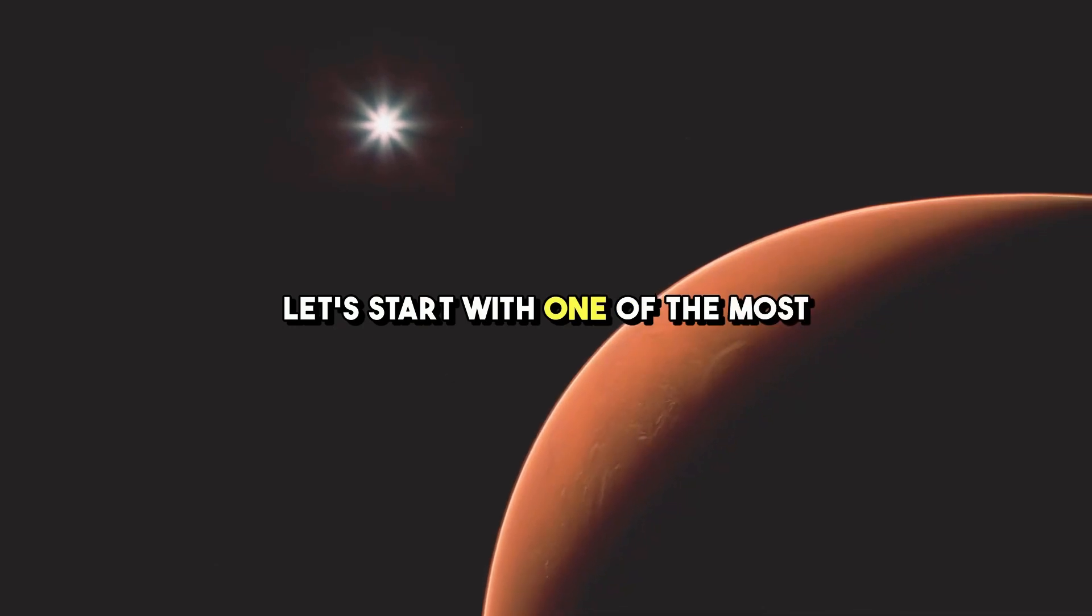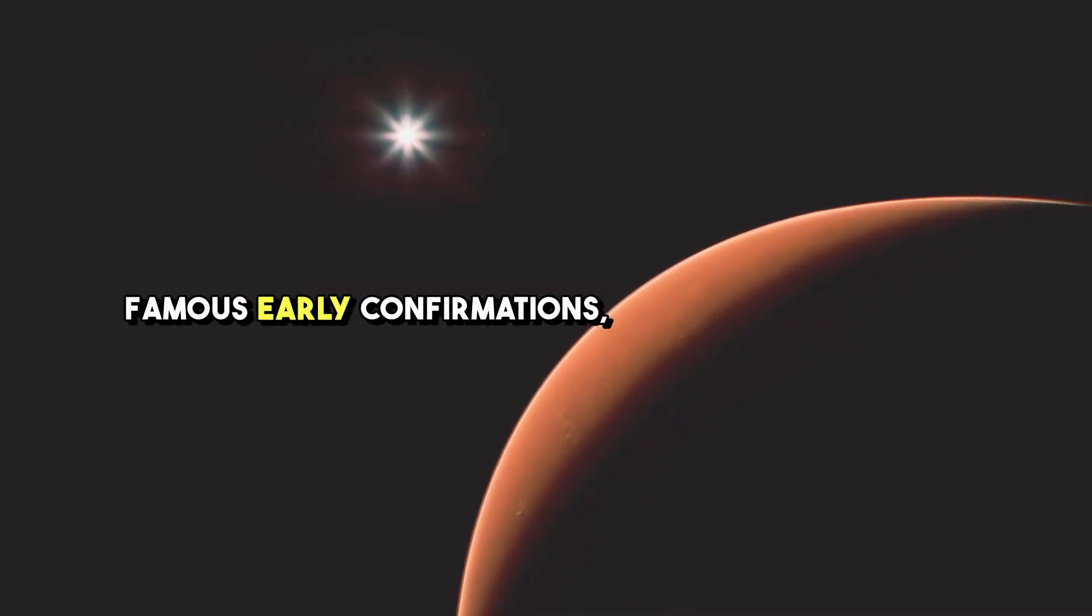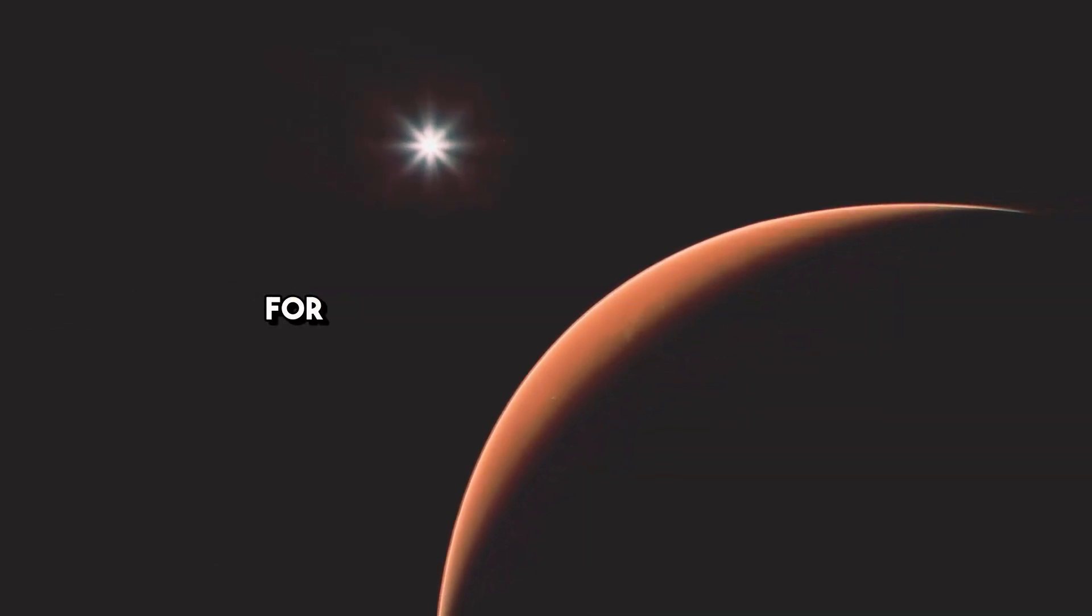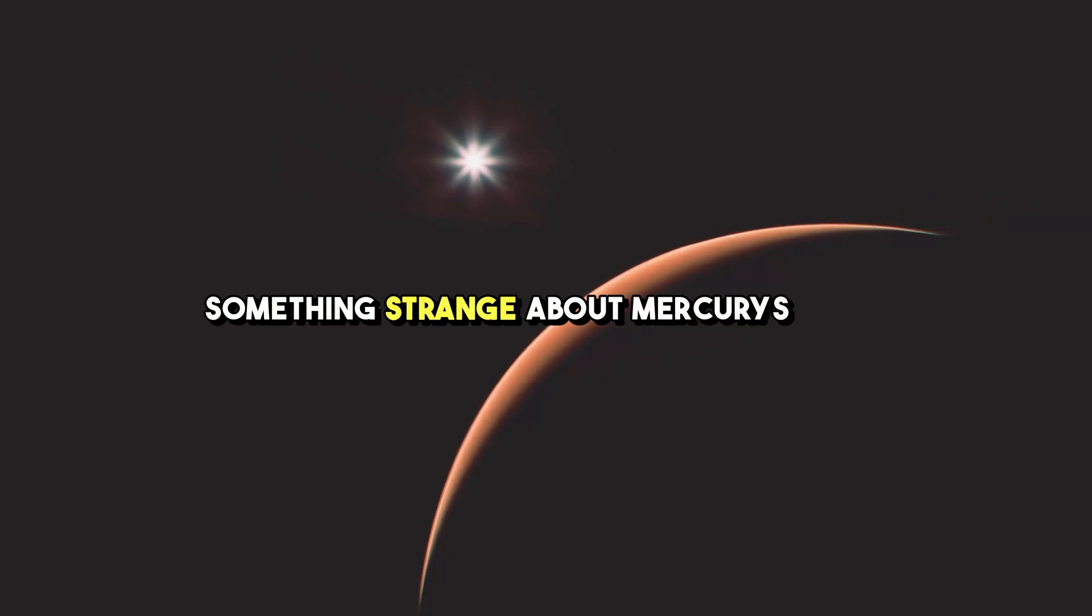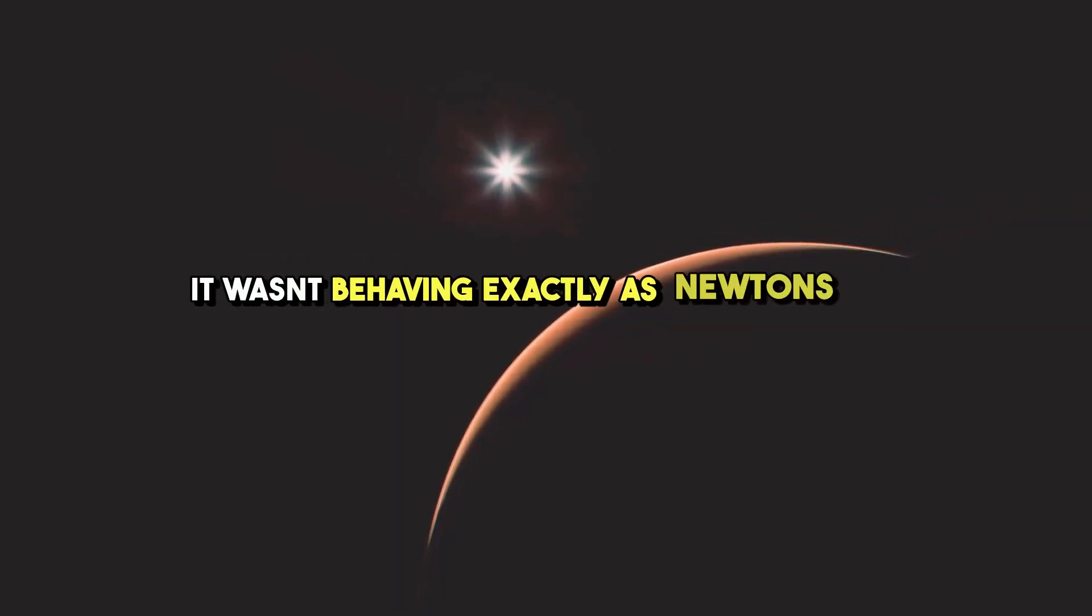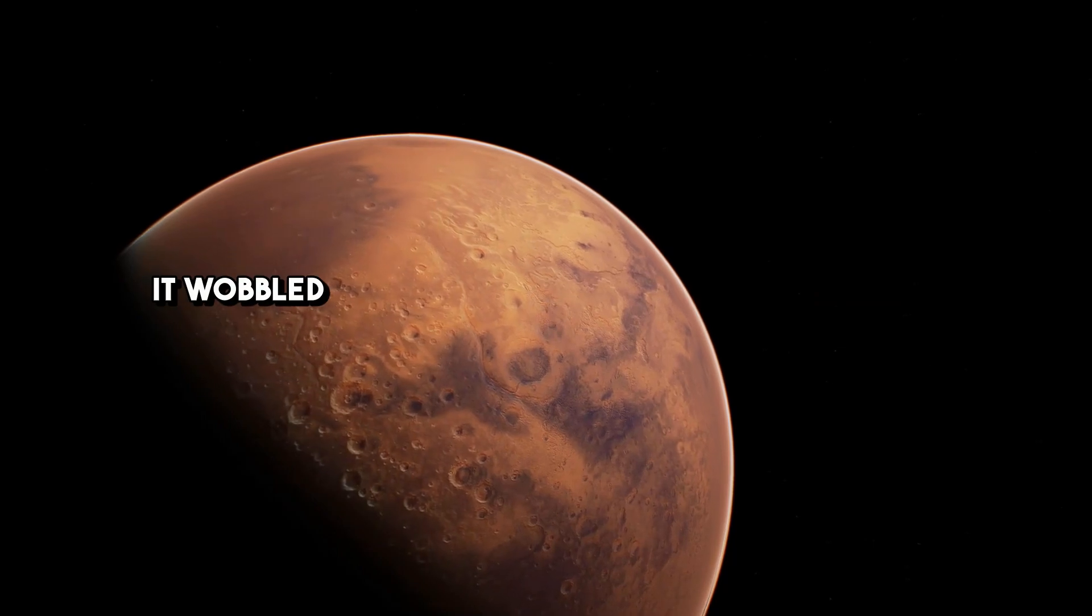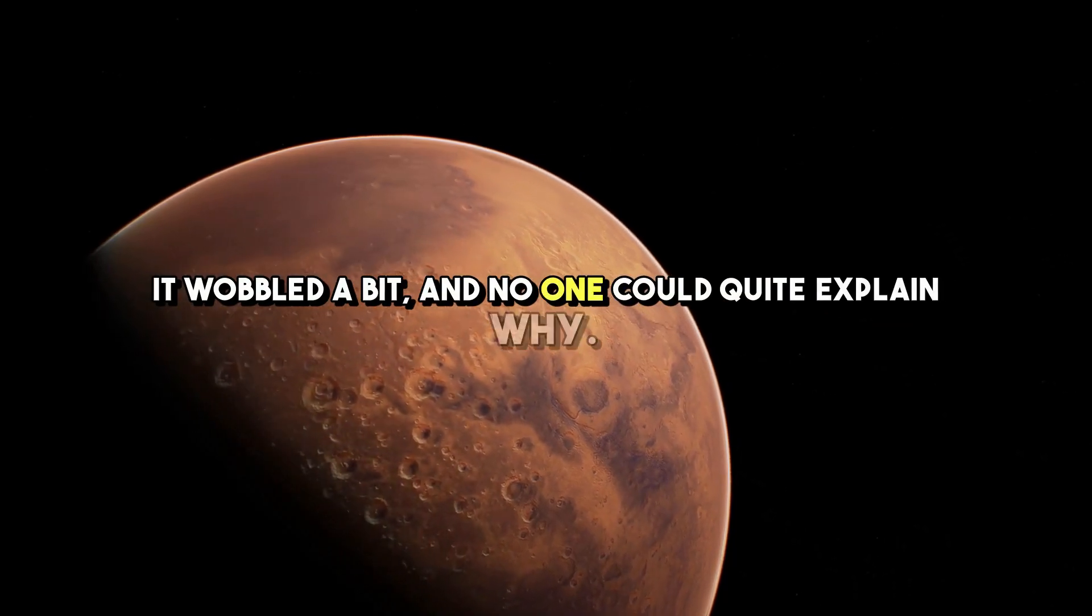Let's start with one of the most famous early confirmations—the orbit of Mercury. For a long time, scientists noticed something strange about Mercury's orbit. It wasn't behaving exactly as Newton's laws predicted. It wobbled a bit, and no one could quite explain why.